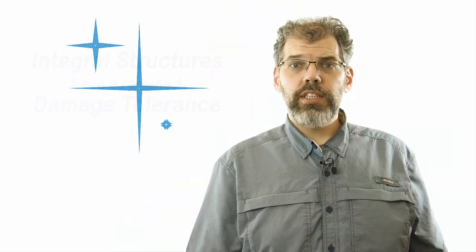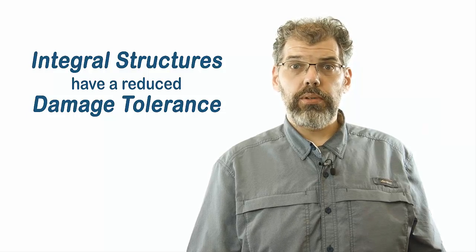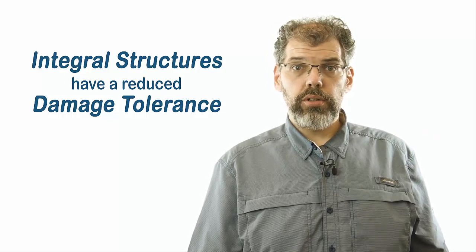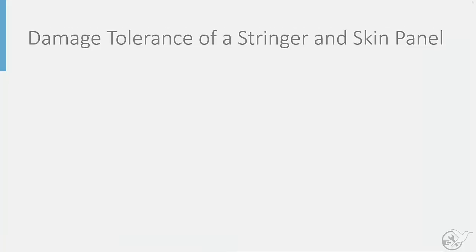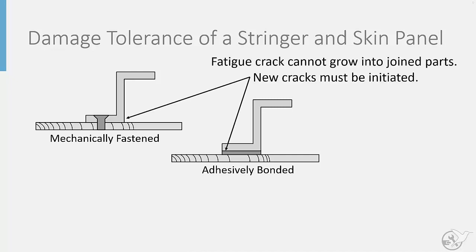However, one disadvantage to be aware of is the fact that it reduces the damage tolerance of the structure. We can illustrate this by visualizing the joining of a stringer to a skin panel. If we look at mechanical fastening and even adhesive bonding, we can see that the stiffener and skin remain as distinct and separate parts. Any fatigue cracks that initiate in one part will be confined to grow in that part.